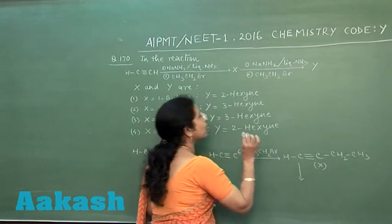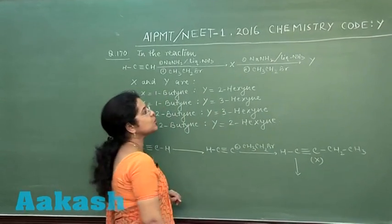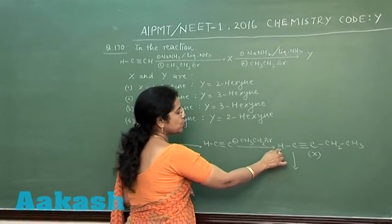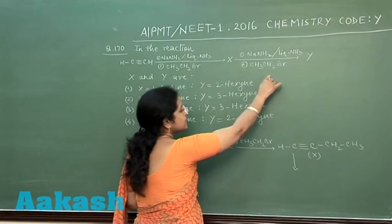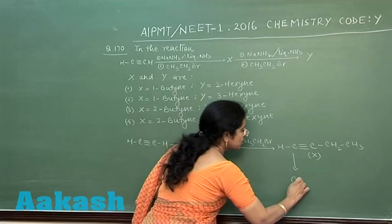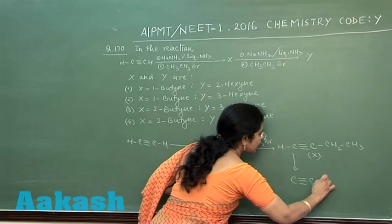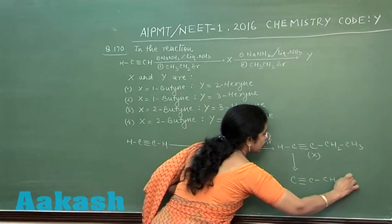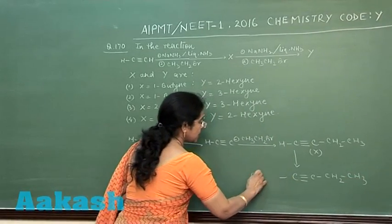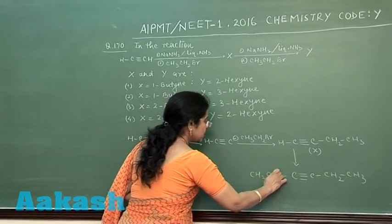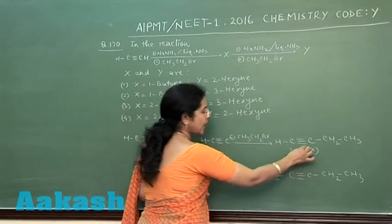Now again the same sequence of reaction is repeated. So next time this proton will be released and this ethyl group will be substituted at the triple bonded carbon atom. So the final product of reaction is Y.